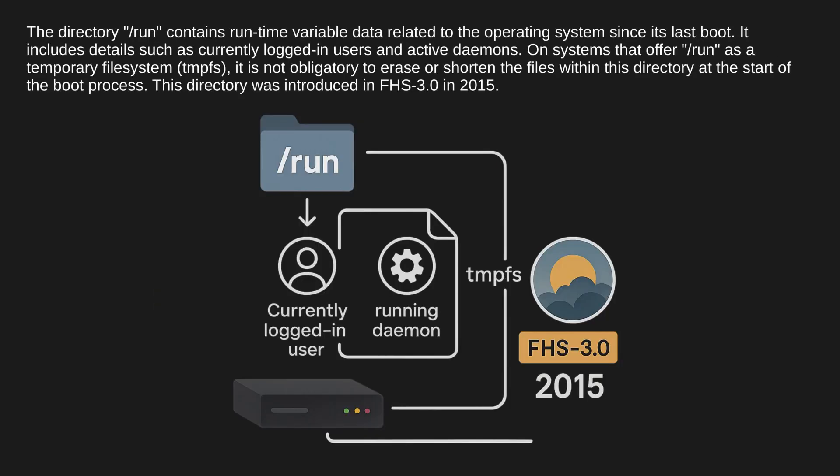The directory /run contains runtime variable data related to the operating system since its last boot. It includes details such as currently logged-in users and active daemons. On systems that offer /run as a temporary file system (TMPFS), it is not obligatory to erase or shorten the files within this directory at the start of the boot process. This directory was introduced in FHS 3.0 in 2015.